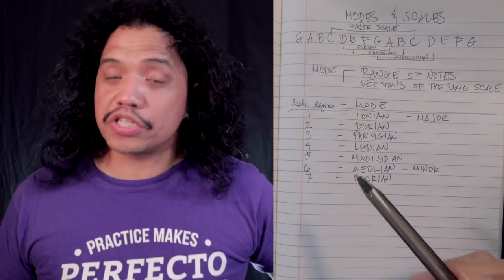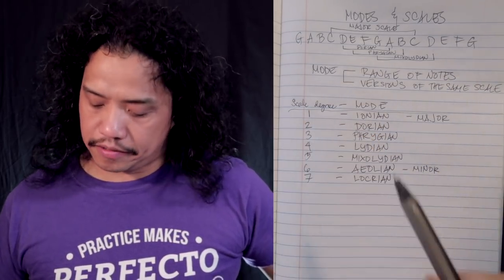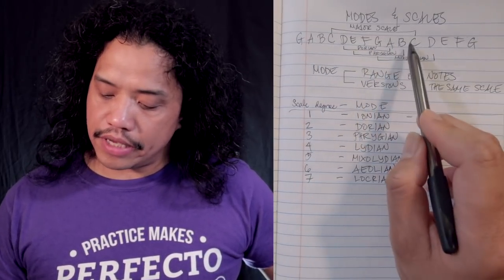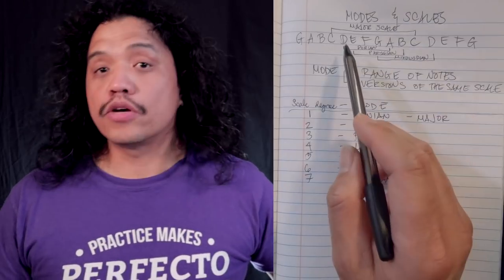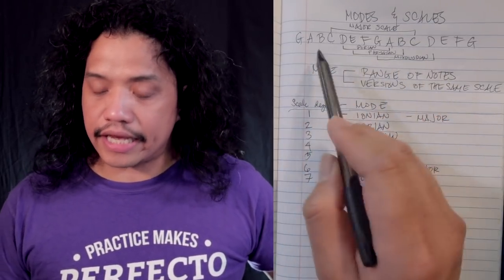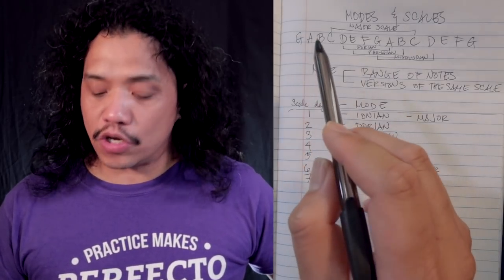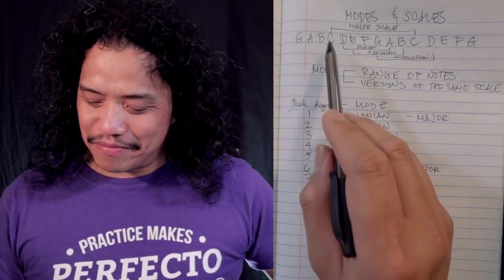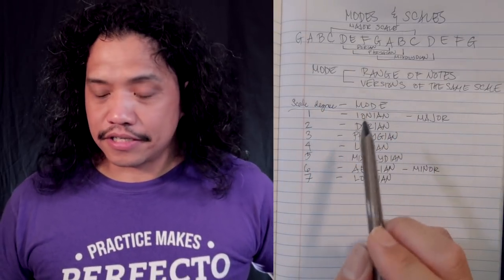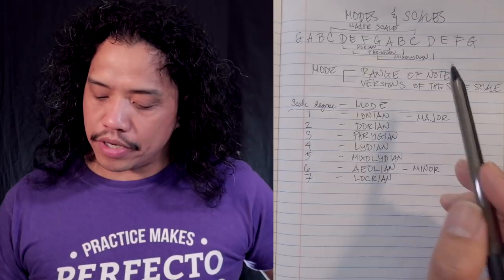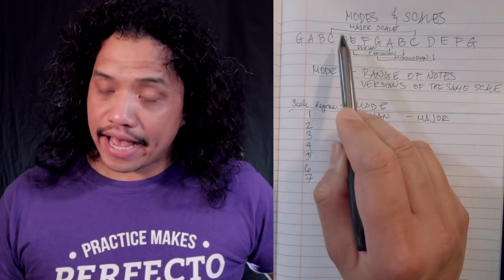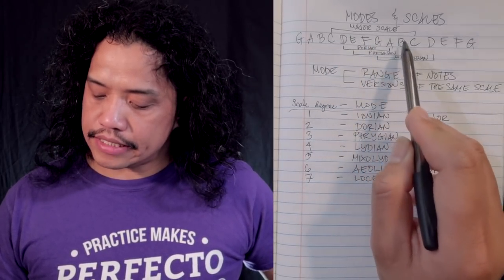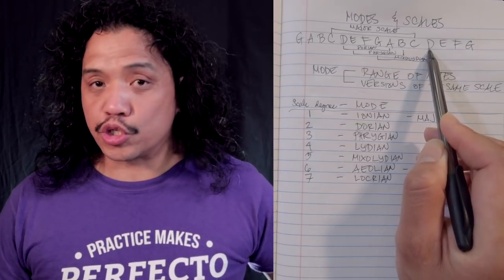Let's apply the seven modes to the notes of the C major scale. For Ionian we start on C, go through the notes of the C major scale, and end on C. So if you play the notes of the C major scale and treat C as your home base — your root, tonal center, or finalis — that will yield the Ionian sound. For Dorian we take the same set of notes but treat D as our root: D, E, F, G, A, B, C, D. That is your Dorian scale.